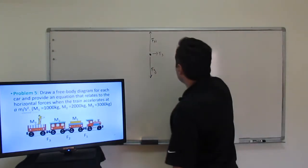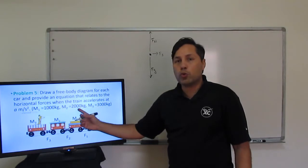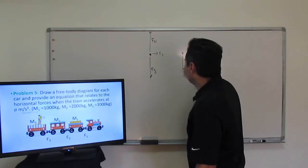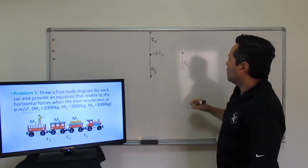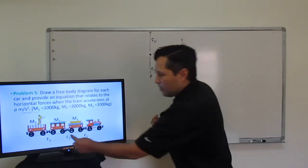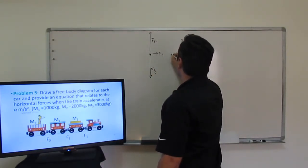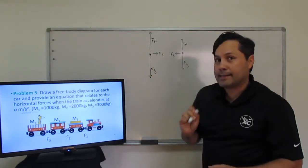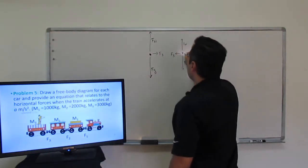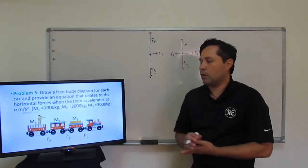For our second cart, notice that the mass is smaller — 2,000 kg compared to 3,000 kg for cart three. So I'm drawing a smaller force of gravity and force normal in the opposite direction. Cart two has a force from cart three toward the left side with the same arrow length. Since it's accelerating at A, I put a longer arrow on the right-hand side for F2. That's the free-body diagram with all forces acting on cart number two.